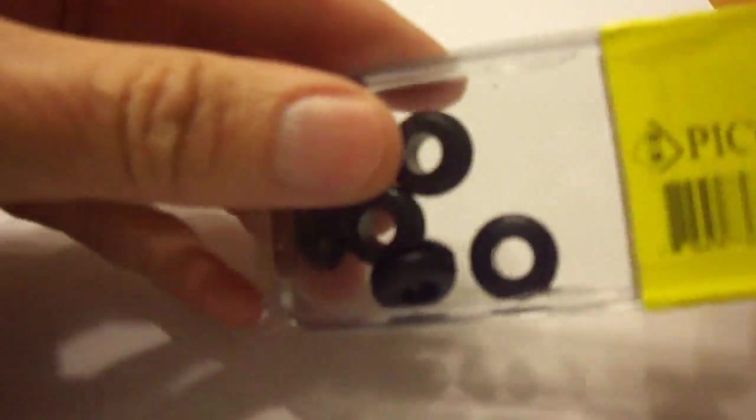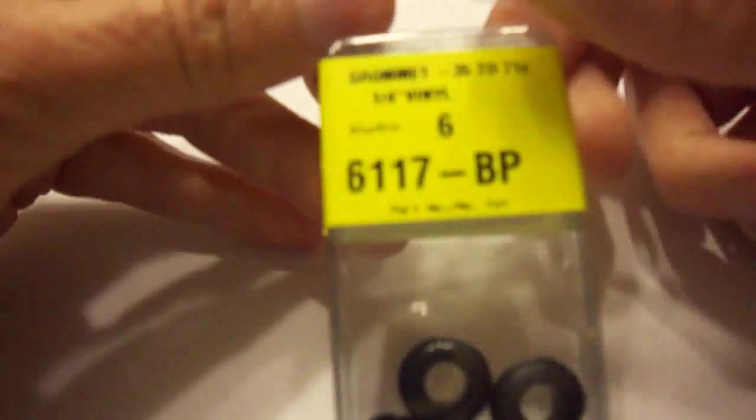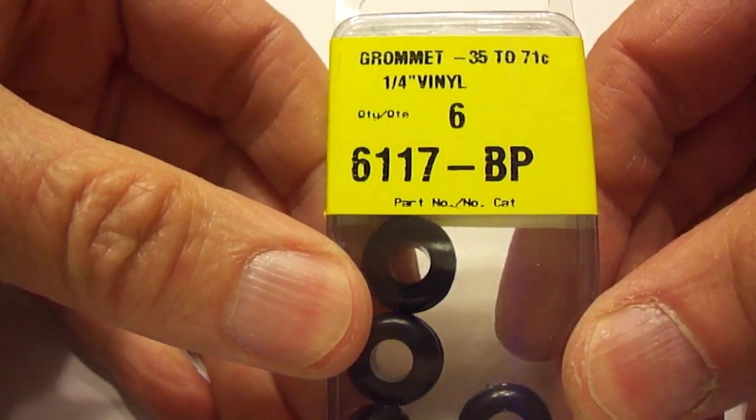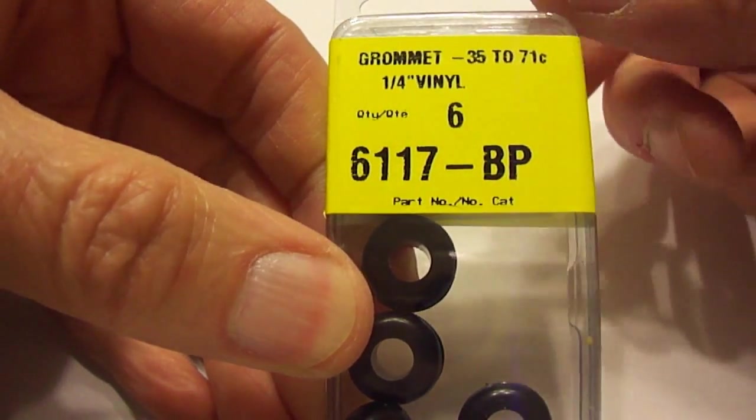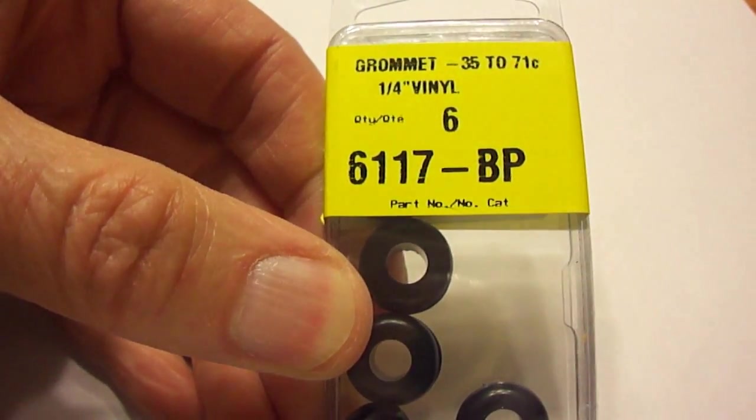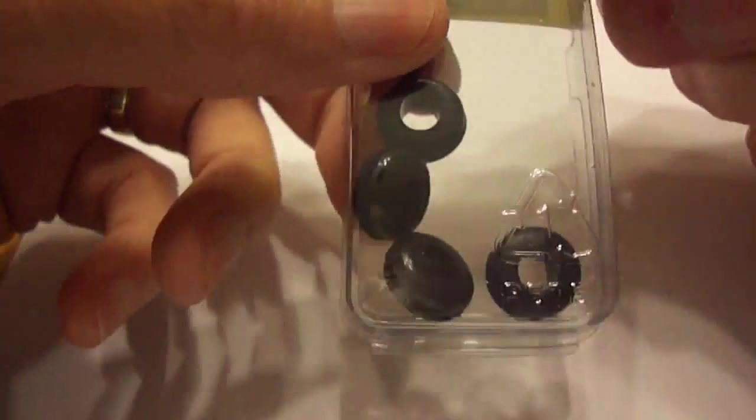I got some package of six grommets, a couple dollars. So they are about one quarter inch ID and about half inch OD. The motors fit in there nice and snug so I think these will probably be the way I go.